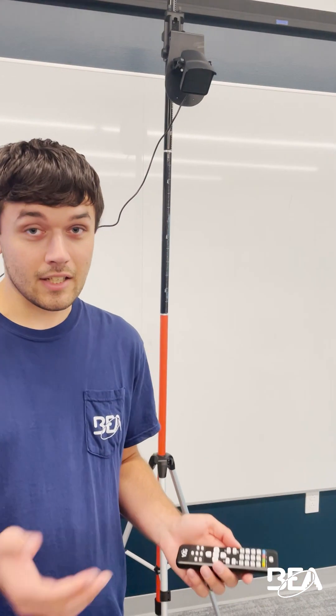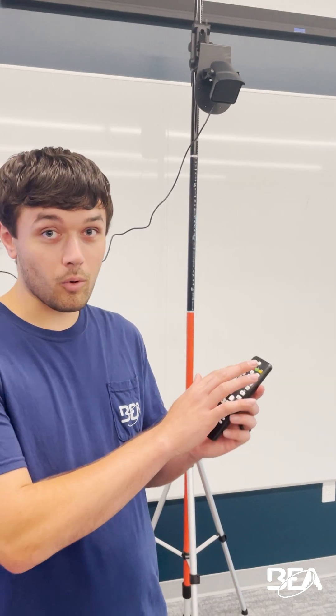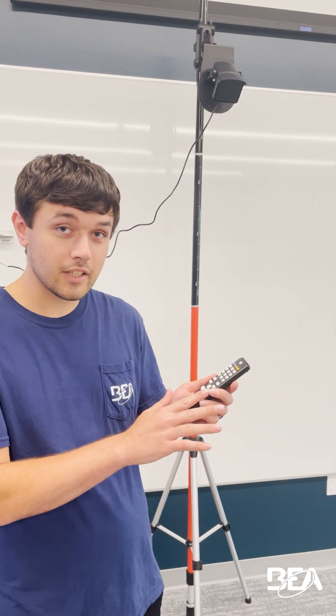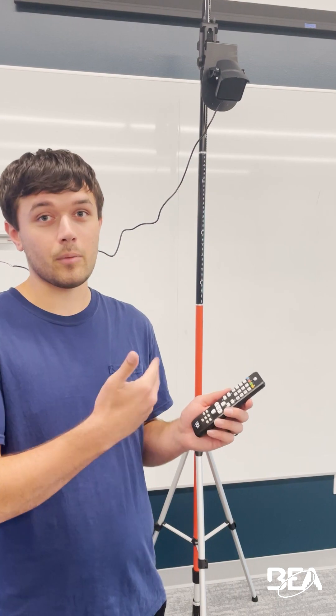Then I'm going to do the same process. Unlock, shaky box, four, lock. If it still sees me, keep going up to five, keep going up to six.